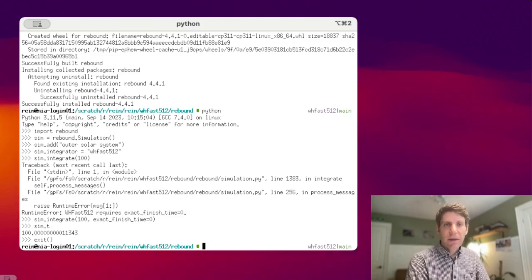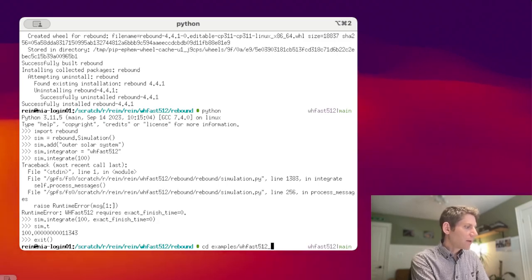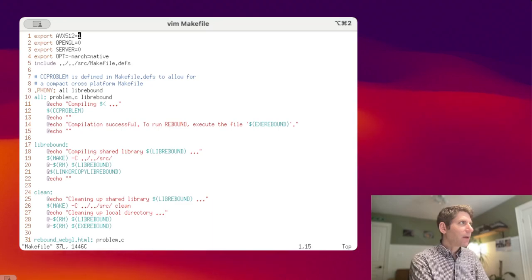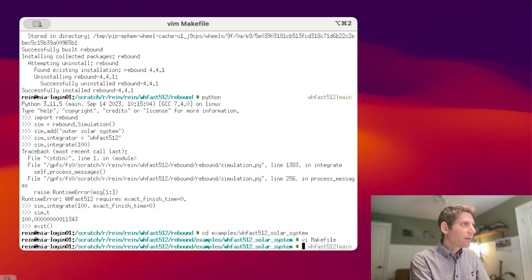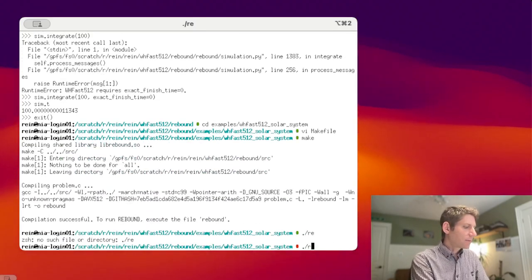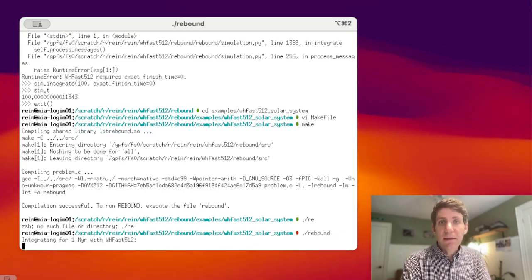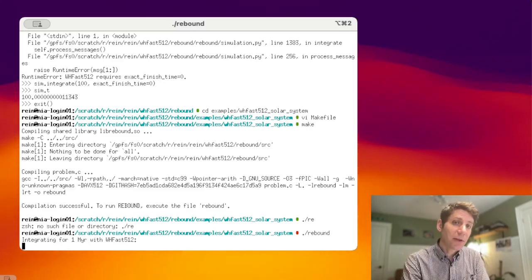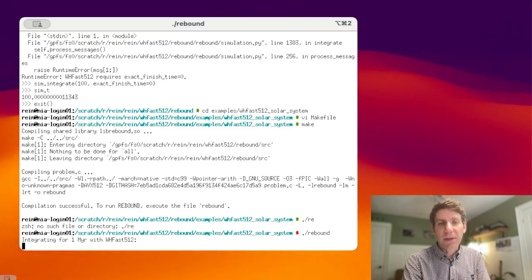This was the Python version of the Rebound interface. You can also look at the C interface. For example, the WHFAST-512 solar system example. Here, if you look at the makefile, you see also that this AVX-512 flag has been set to 1. So with this set to 1, you can compile Rebound and then run the simulation. In this default example, it will first integrate the solar system for 1 million years using WHFAST-512. It will then run the same simulation again, but with the normal version of WHFAST. And then show you how much of a speedup you will get.